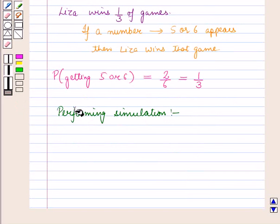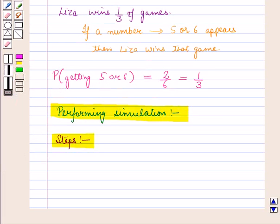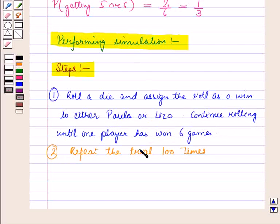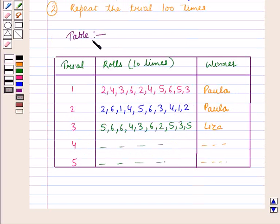After forming the simulation, we will find the probability of Paula winning by performing the following steps. In the first step, roll a die and assign the roll as a win to either Paula or Lisa. Continue rolling until one player has won 6 times. In the second step, repeat the trial 100 times and record the results in a table with columns for the trial number, the die rolls, and the winner.